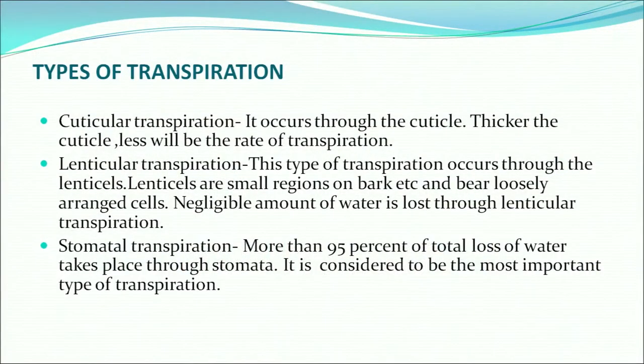Cuticular transpiration occurs through the cuticle, which is the thick layer over the leaf surface. The thicker the cuticle, the less will be the rate of transpiration. Lenticular transpiration occurs through the lenticels — small regions on the bark bearing loosely arranged cells. A negligible amount of water is lost through lenticular transpiration.